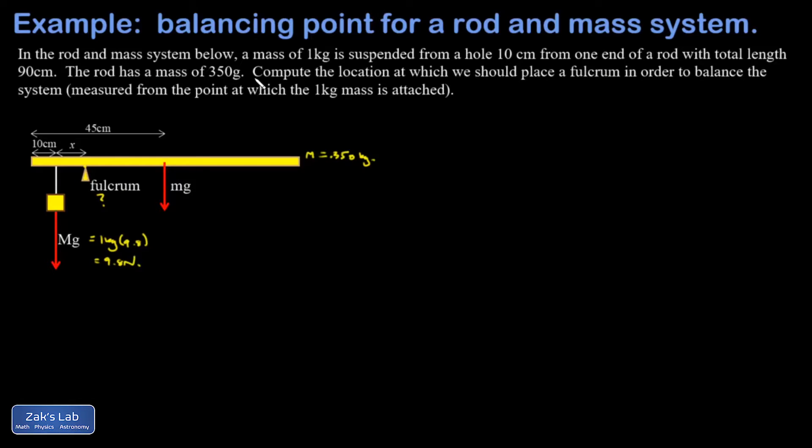Remember, when we're talking about the torque exerted by gravity, you can compute that by just looking at the center of mass of the extended object and pretending all the mass is concentrated there. So that's why I've drawn the force exerted by gravity on little m right at the center of the stick. And that's going to be 0.350 times 9.8, giving me approximately 3.43 newtons.